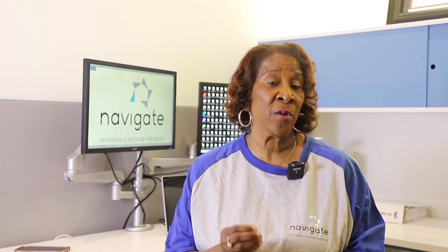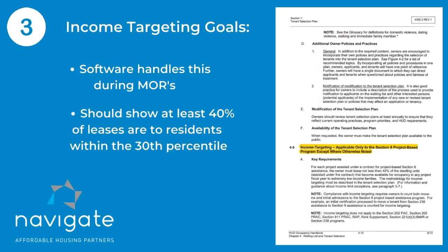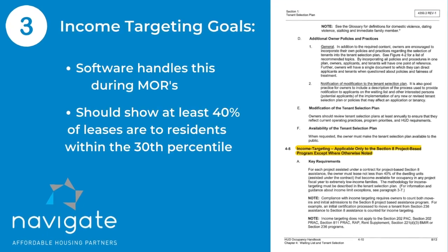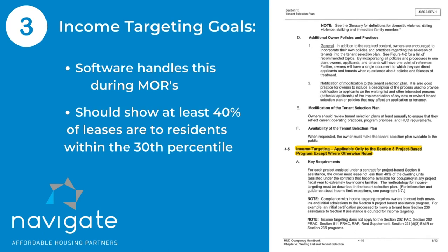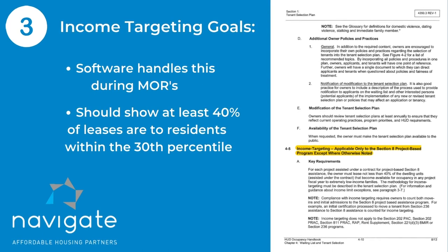Last but not least, we want to talk about the income targeting goal. Usually your software will print out for the reviewer the income targeting goal to show that you have leased at least 40 percent to the 30th percentile residents. So keep that in mind.